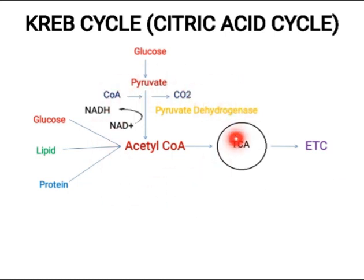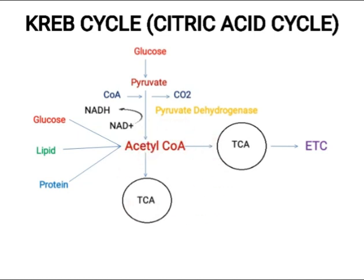Now this Acetyl CoA enters the Krebs cycle, and in the Krebs cycle we get NADH and FADH₂. These NADH and FADH₂ produced in the Krebs cycle donate electrons in the electron transport chain. The mechanism of the electron transport chain has been explained in detail in my previous lecture.